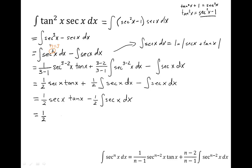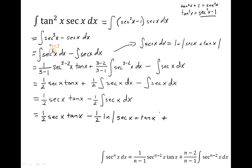So the final answer turns into one half secant x tangent x minus one half the natural log of the absolute value of secant x plus tangent x, plus our constant C.